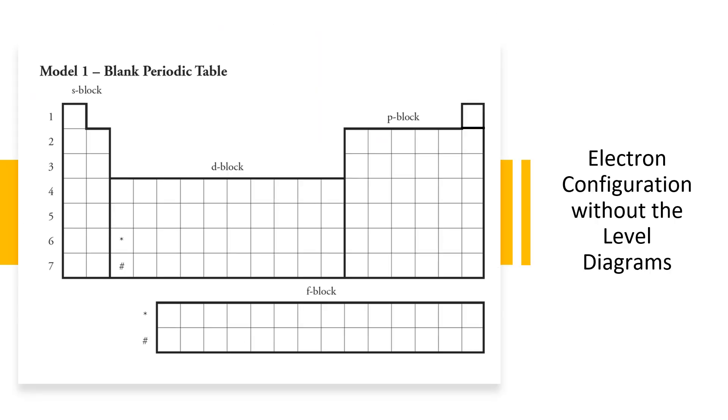So looking at this blank periodic table, on the far left side you have 1, 2, 3, 4, 5, 6, 7. Those are the energy levels, the levels around a nucleus, like in a Bohr model. So it's called the S-block, D-block, P-block, and F-block. So S-P-D-F, those sound like the sub-orbitals we talked about in class recently.